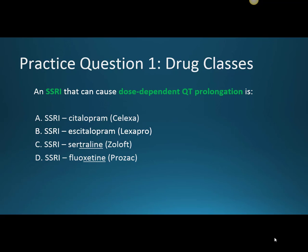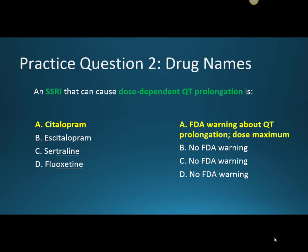Practice question number one: an SSRI that can cause dose-dependent QT prolongation is? The correct answer is A, Citalopram. The FDA came out with a warning about QT prolongation, so now there are dose maximums in different patient populations. The dose maximum in elderly patients is 20 milligrams per day, and in adults it is 40 milligrams per day. With this QT prolongation warning, we want to make sure that we get an electrocardiogram of every patient before we start them on this medication. B, C, and D are incorrect because there is no FDA warning about QT prolongation with any of those other medications.